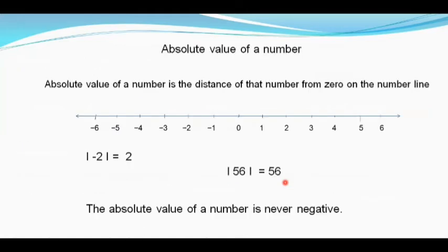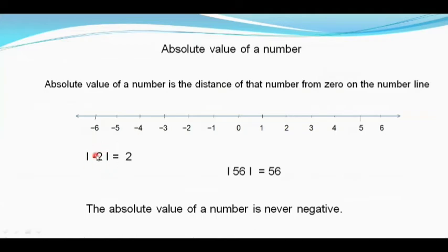Let us understand something new: the absolute value of a number. The absolute value is the distance of that number from zero on the number line. The symbol used is called absolute value or modulus. For the absolute value of minus 2, we move two places from zero to reach minus 2, so the distance is two units.